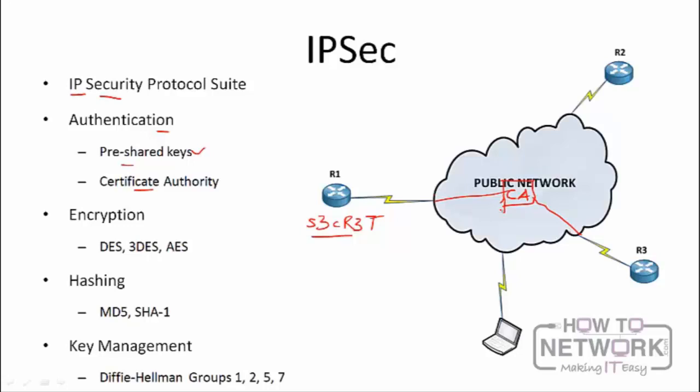Certificate authorities are not only used for VPNs — they're also used for web servers. For example, when you access an HTTPS website, the site must have a certificate verified by a CA. Browsers like Chrome or Firefox will try to authenticate the certificate, and if the web server is not using a trusted CA, your browser will warn you that the certificate is not trusted.